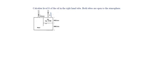To find the height H, let us equate the pressure at point A and point B. Pressure at A is equated to pressure at B.